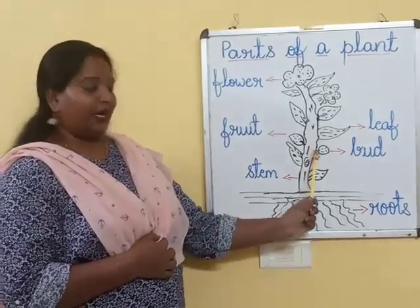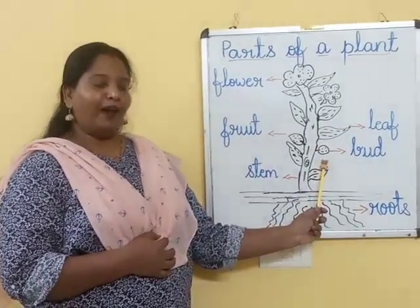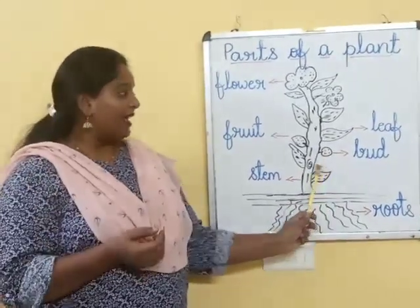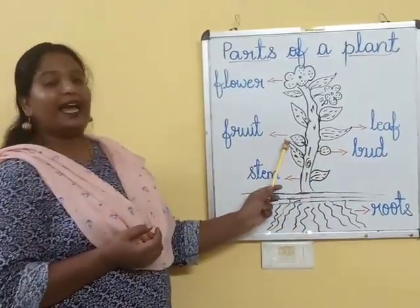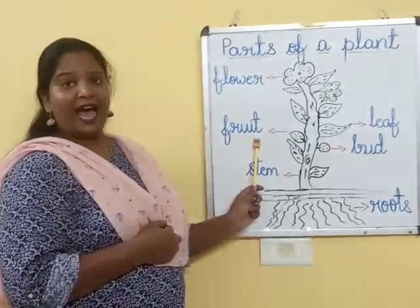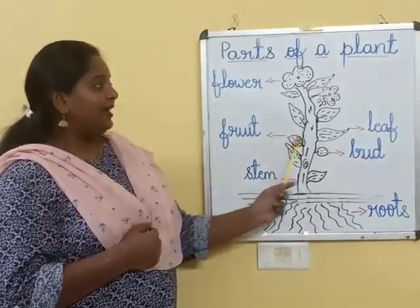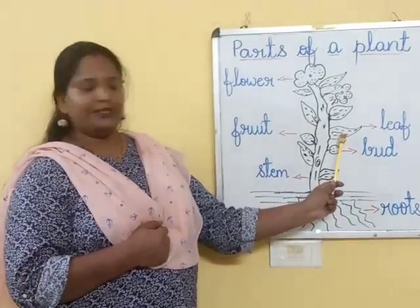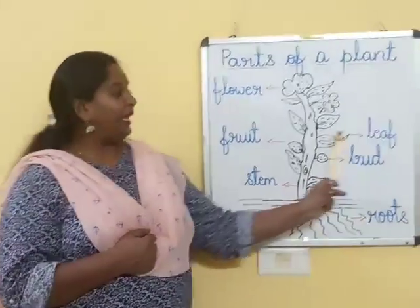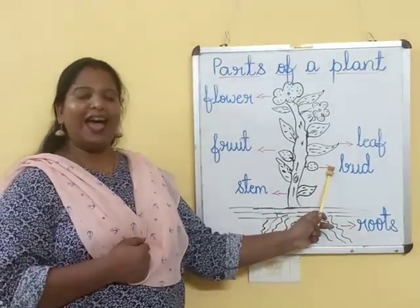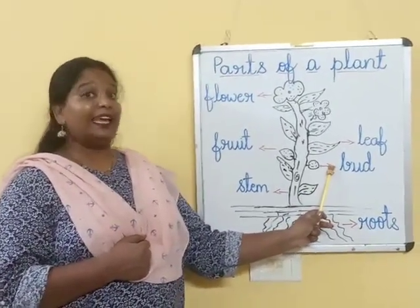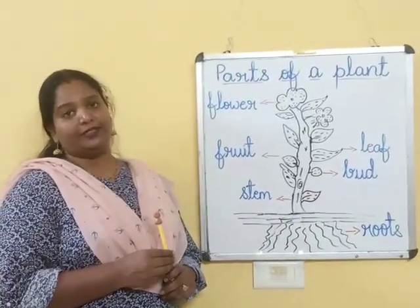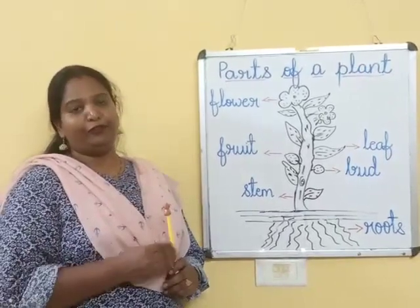Once the stem becomes stronger, slowly it starts growing. Now this part of the plant that you see is called a bud. From a bud, a flower grows. Now this is called a fruit. A fruit has many or one seed in it. Now this part of the plant — I am sure you must have seen — it is known as the leaf. Leaf is also known as the kitchen of the plant because it prepares food for the plant, and with the help of that food, the plant grows.